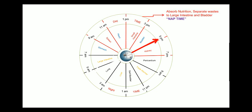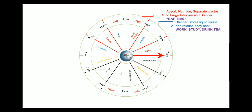Between 3 pm to 5 pm, this time is reserved for the bladder, which performs functions like storing liquid waste and releasing body heat. It is a good time for work and study and taking a cup of tea. Between 5 to 7 pm, the kidney is active, regulating functions like filtration and storage of nutrition. This is also considered an exercise time and suppertime — it is also the ideal time to take dinner. After 7 pm, GIT motility decreases and can create problems in digestion, so before 7 pm is the right time to take dinner.